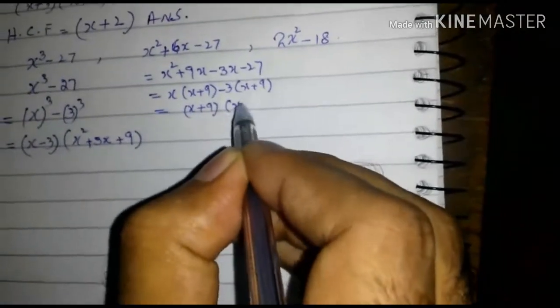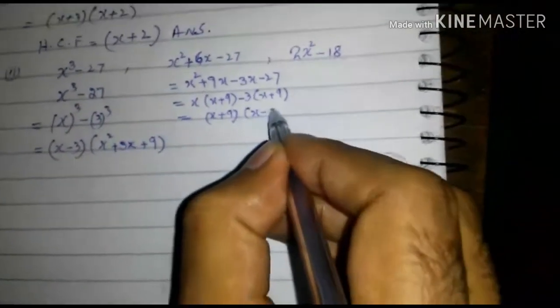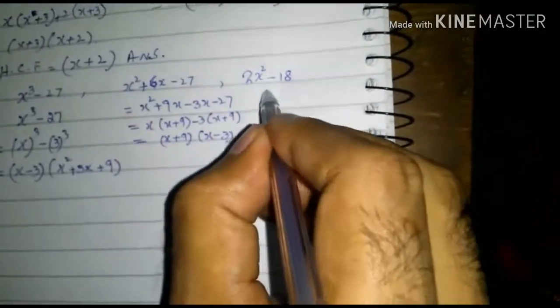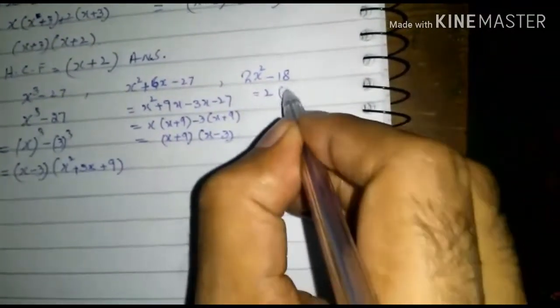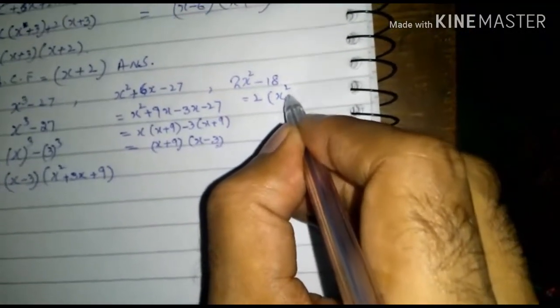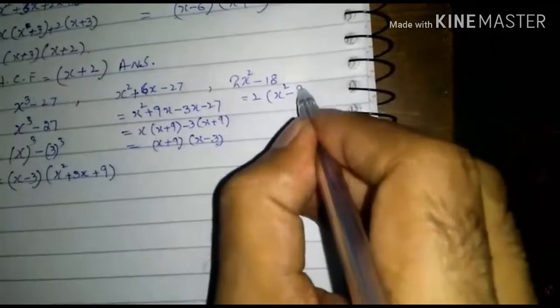So it is written as x plus 9 into x minus 3. Now consider this third term. 2 is common. Remaining is x square minus 9.